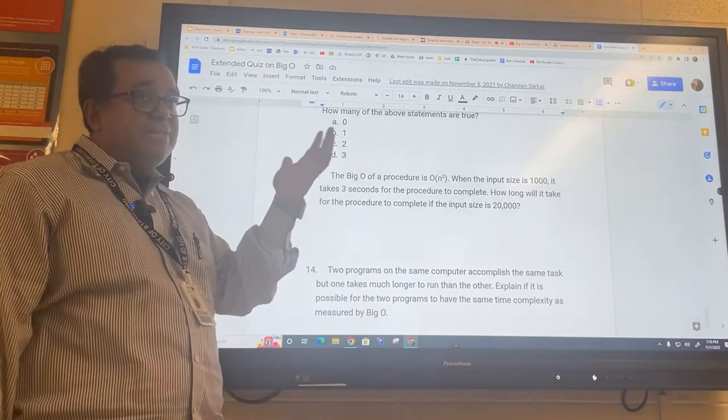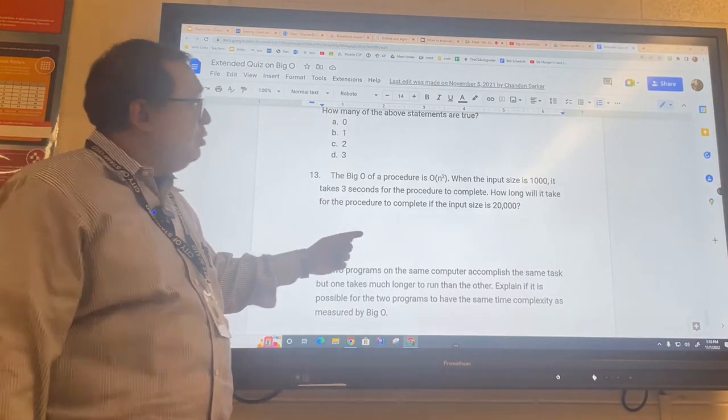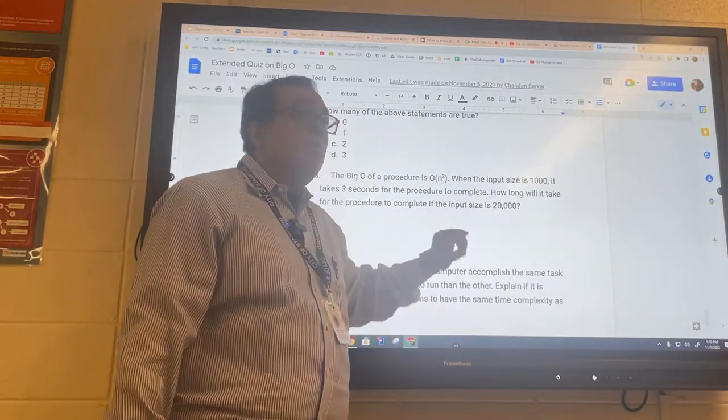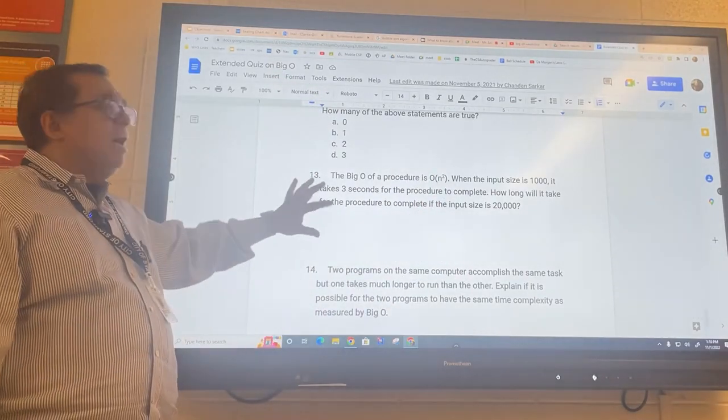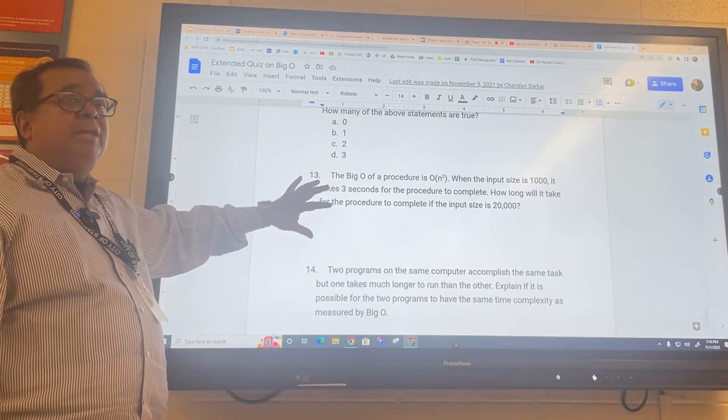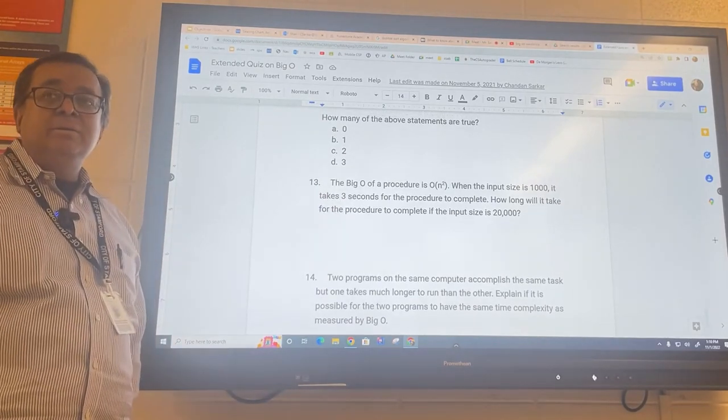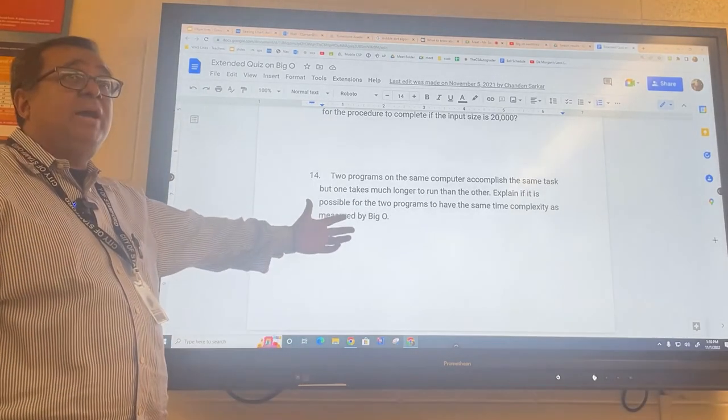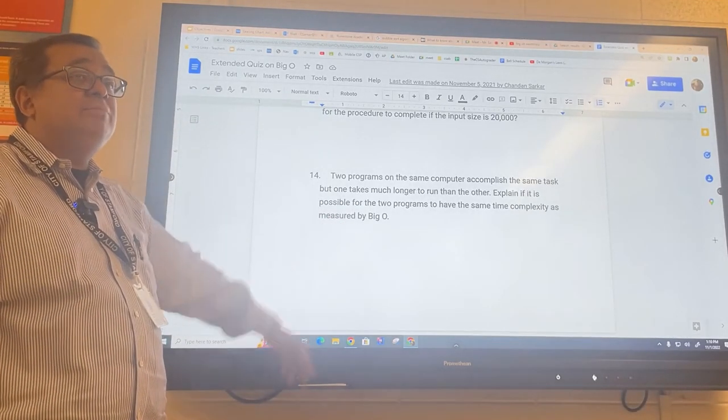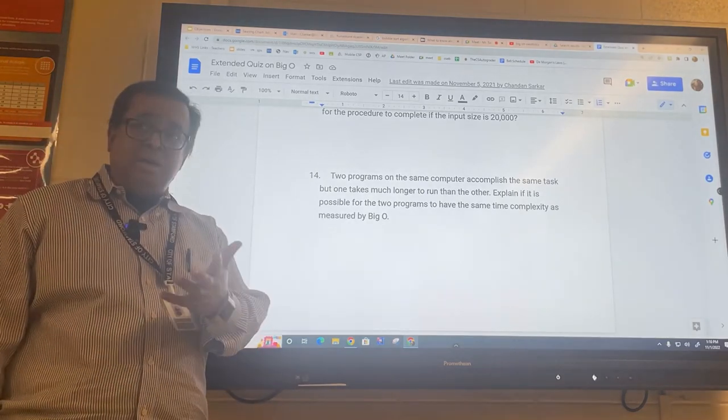Okay, imagine a process that's squared, right, squared. And the input to the process grows by 20 times. What will the output to the process grow by? What would be the output now of the second case? What is the, how many seconds would it be? 1,200 seconds. Is it possible for two computer programs to have the same Big O algorithms and yet one takes a lot longer than the other? Could be a number on the outside. Constant.